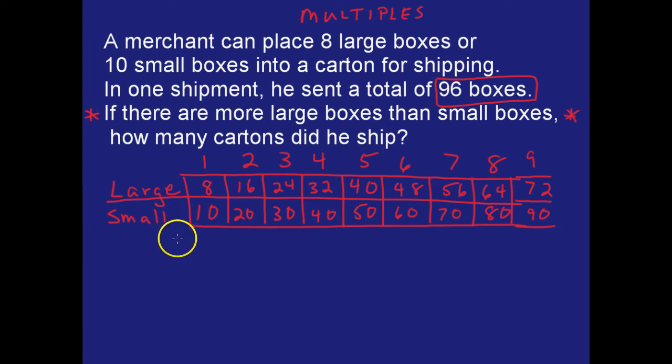The small boxes are multiples of 10, so that means no matter what, the second number is going to be a zero. And so the large has to end in a 6, and that only happens here and here.